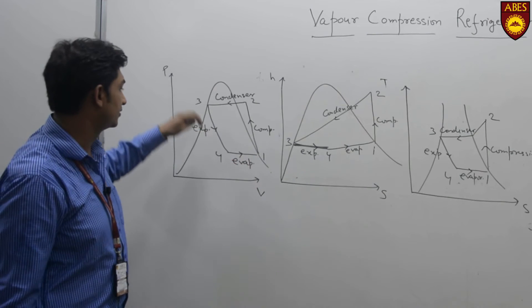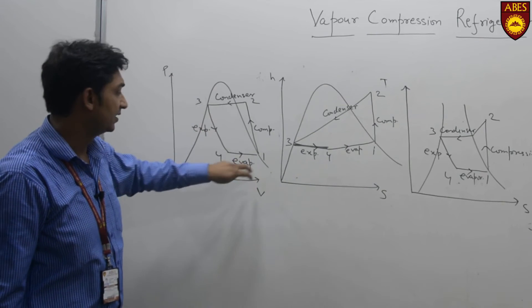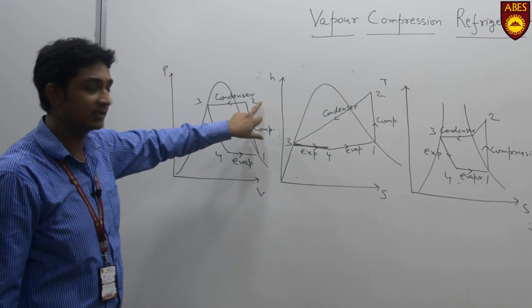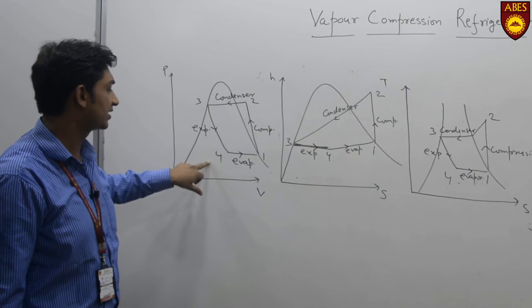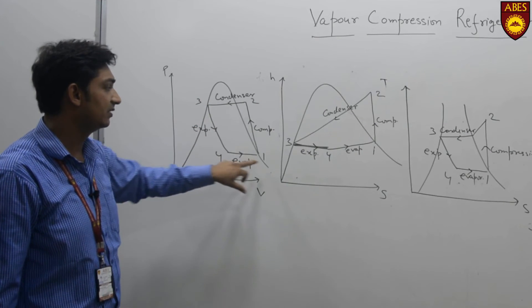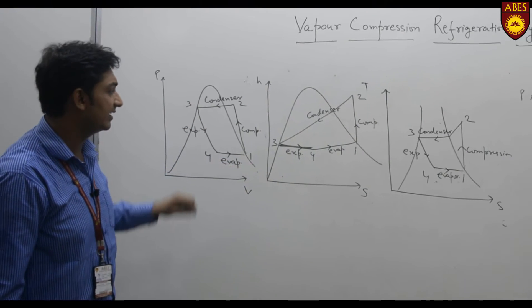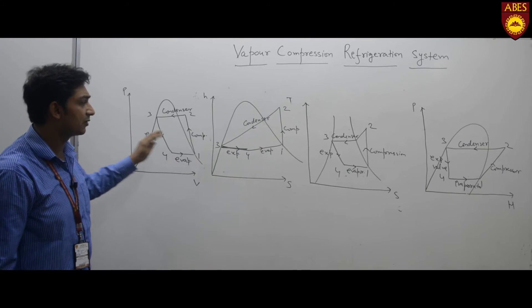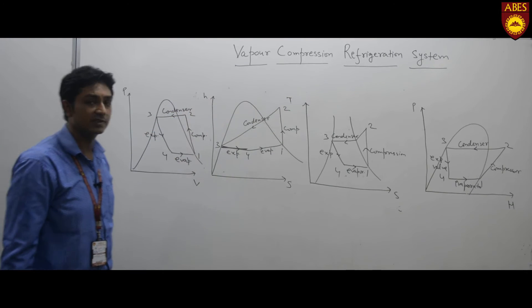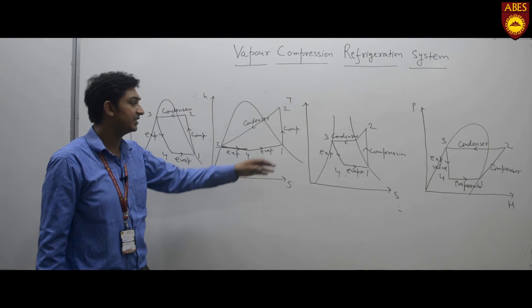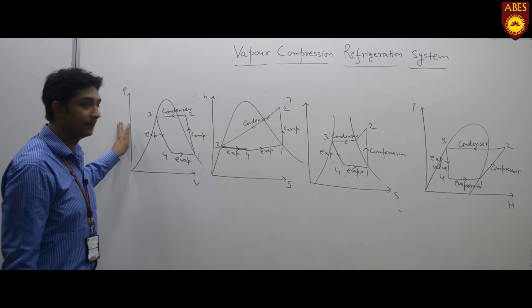We can also show this on a PV diagram: 1 to 2 compression, 2 to 3 condenser, 3 to 4 expansion, 4 to 1 evaporator. So we can study all the properties of this VCRS on these four diagrams: PH, TS, HS, and PV.